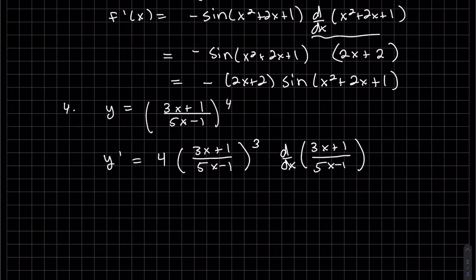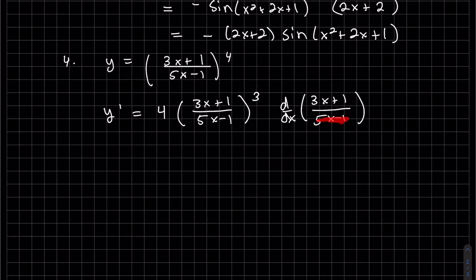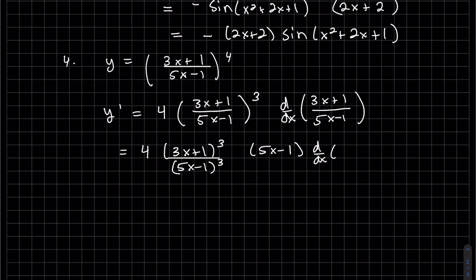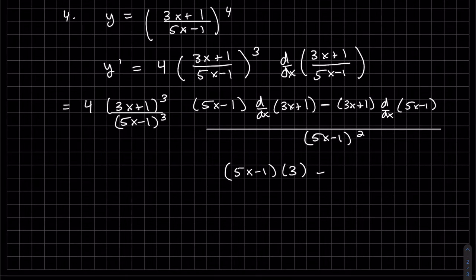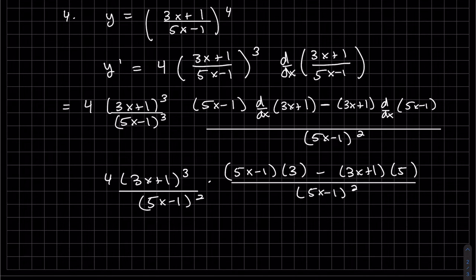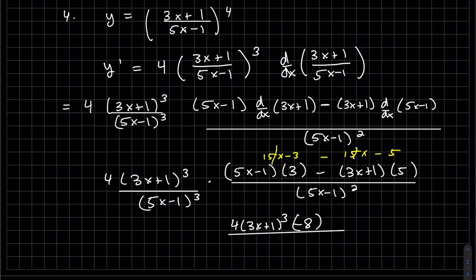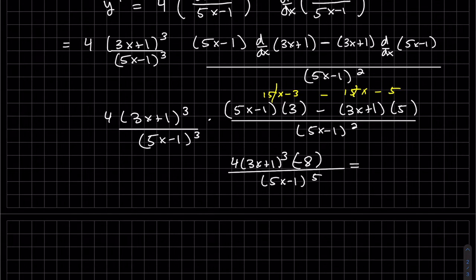So now we have the quotient rule to do. Since I know this will be (5x minus 1) squared on the bottom, I think I'm going to separate this at the same time, because we do need to simplify. The quotient rule is: the bottom times the derivative of the top, minus flip-flop. I can see I can combine these — they have the same base, so you add the powers. Let's simplify this algebraically; it's minus 8 on top.